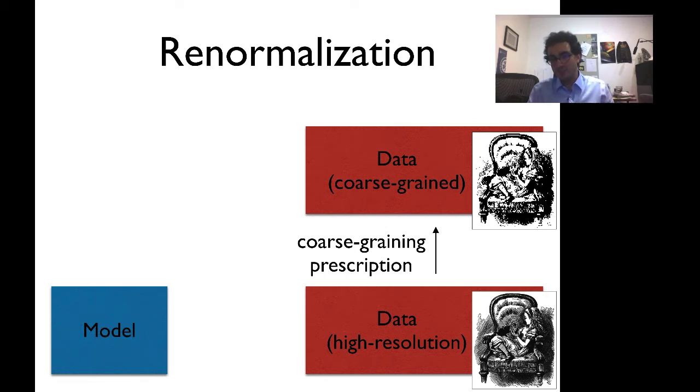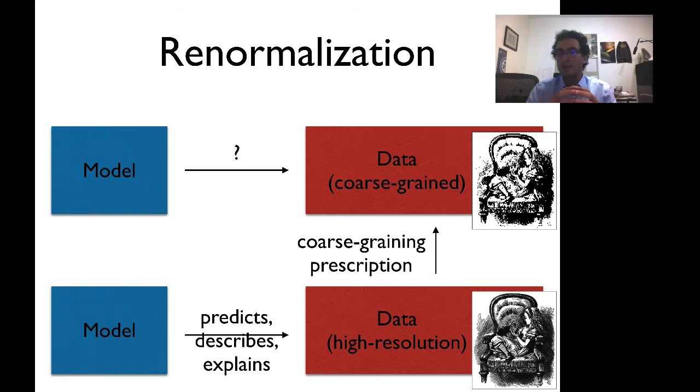So let's take the highest resolution that you can imagine for a particular system, and take the model that you think best predicts or describes or explains the data at that high-resolution level. Then we can ask the obvious question. What model best describes the data at the coarse-grained level? And what's the relationship between those two models? The entire story of renormalization is the relationship between what happens when you coarse-grained the data, and what happens when you look at the underlying structures of the models that that coarse-graining demands.